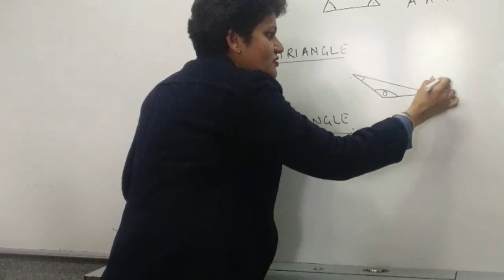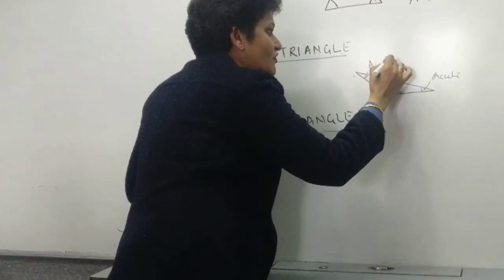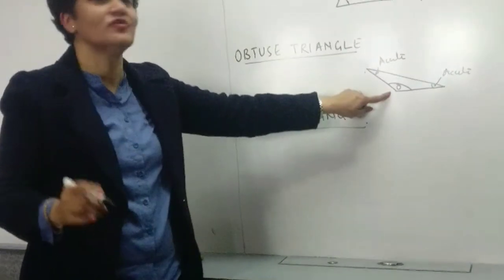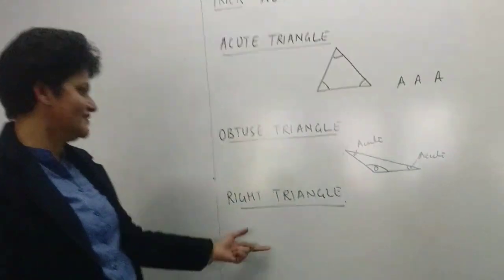This is acute. And this one is? Acute. So in an obtuse triangle, if you remember, there will be only one obtuse angle.